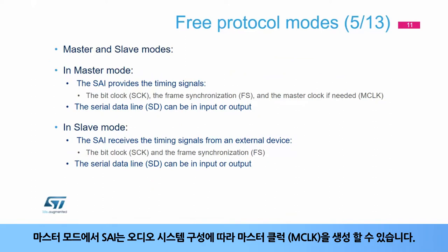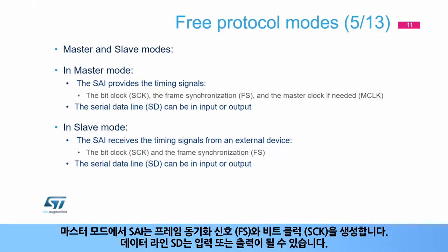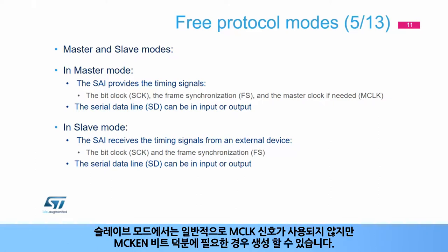In master mode, the SAI can generate the master clock (MCLK) depending on the audio system configuration. This master clock provides a reference clock to the external audio codec. In master mode, the SAI generates the frame synchronization signal (FS) and the bit clock (SCK). The data line (SD) can be either input or output. In slave mode, the MCLK signal is generally not used, but can be generated if needed, thanks to the MCK_EN bit.